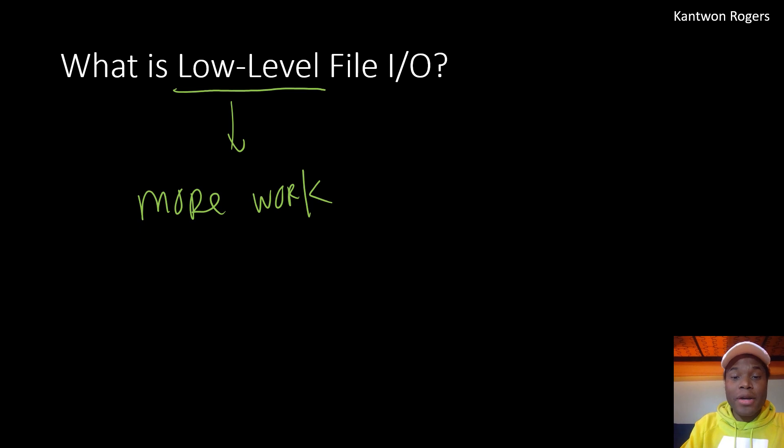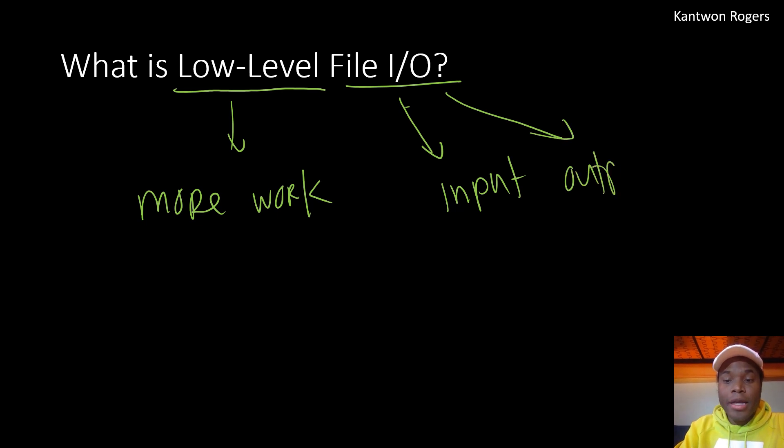And so the second part is the file I/O. We're reading through files - that's the file part. The I stands for input and the O stands for output. So basically, we will be reading in files and outputting and creating new files.